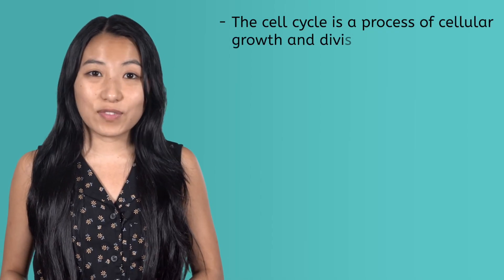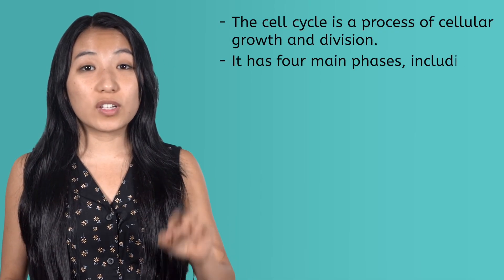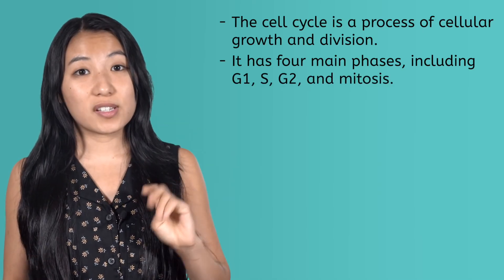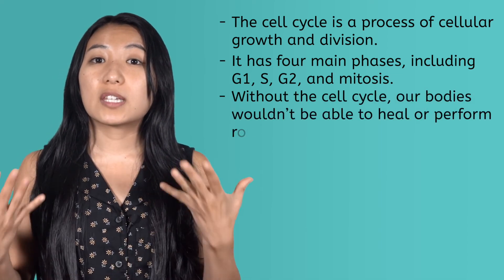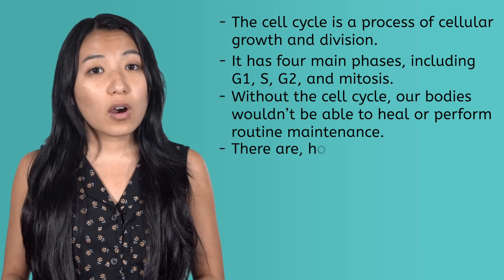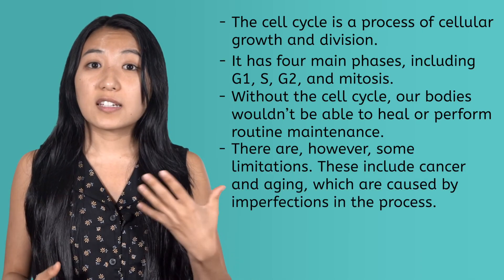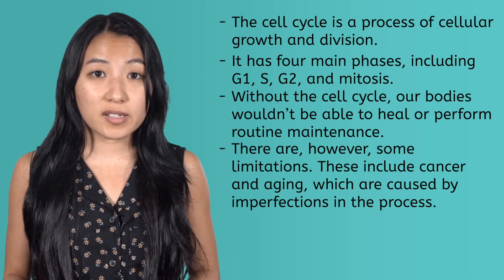Alright, we have now covered the basics of the cell cycle, which is a process of cellular growth and division. It has four main phases, including G1, S, G2, and mitosis. Without the cell cycle, our bodies wouldn't be able to heal or perform routine maintenance. There are, however, some limitations — these include cancer and aging, which are caused by imperfections in the process. And that, fellow biologists, concludes our unit over cellular processes. In our next unit, we'll explore the field of genetics as we examine the structure and expression of DNA. Until then, I'm Caroline, and remember, life is full of wonders. So keep learning, and don't ever stop wondering. Take care.